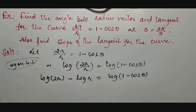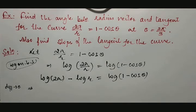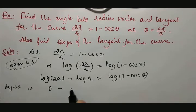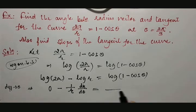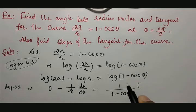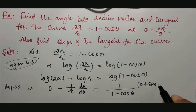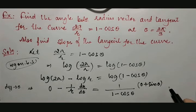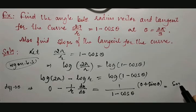Differentiating with respect to θ: the differentiation of log(2a) is 0, minus the differentiation of log(r) gives −(1/r)(dr/dθ), which equals the differentiation of log(1 − cos θ), giving 1/(1 − cos θ) multiplied by (0 − (−sin θ)), which simplifies to sin θ/(1 − cos θ).